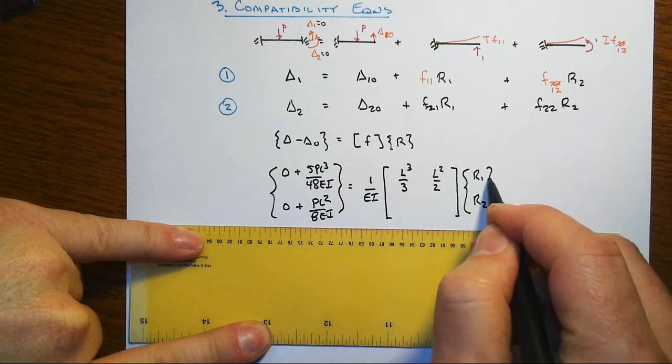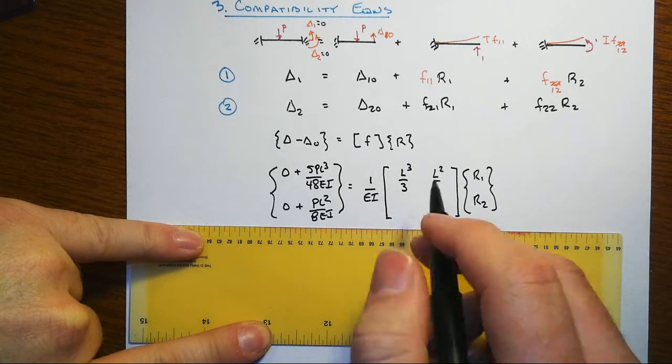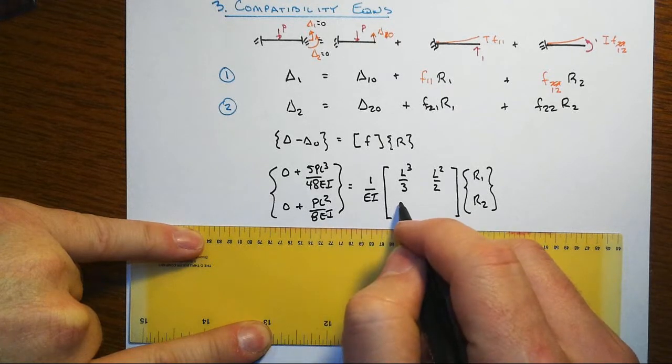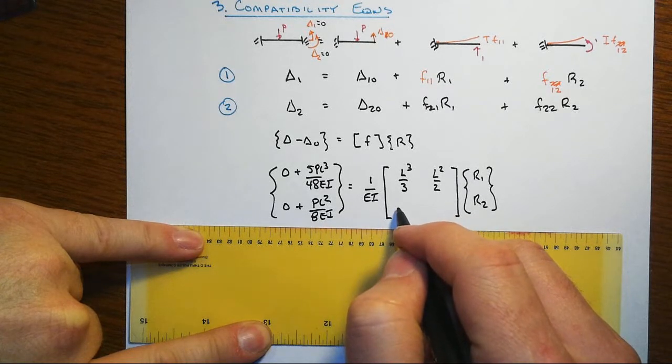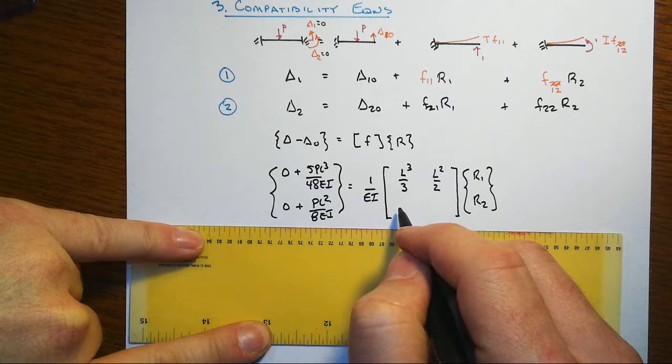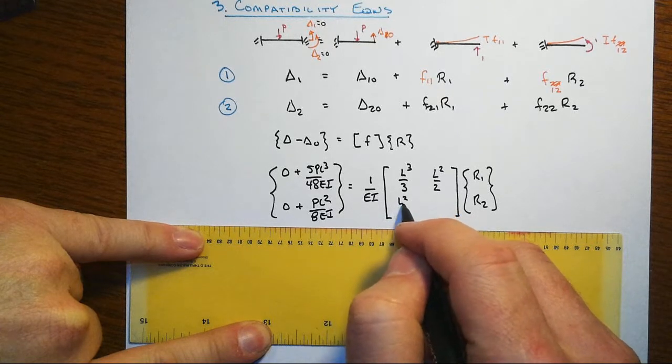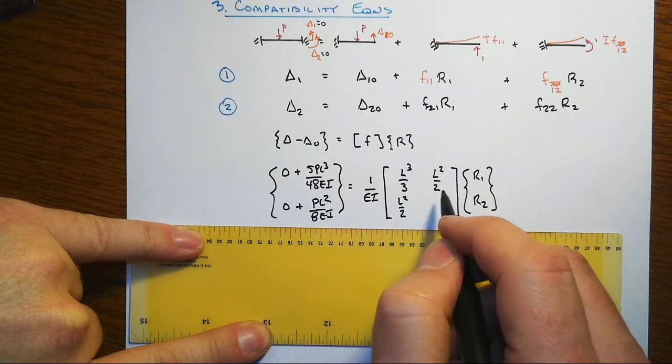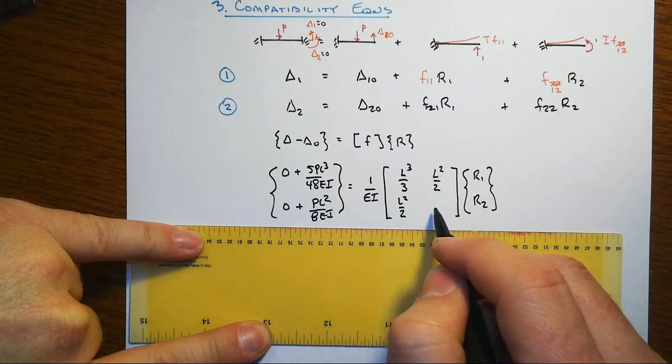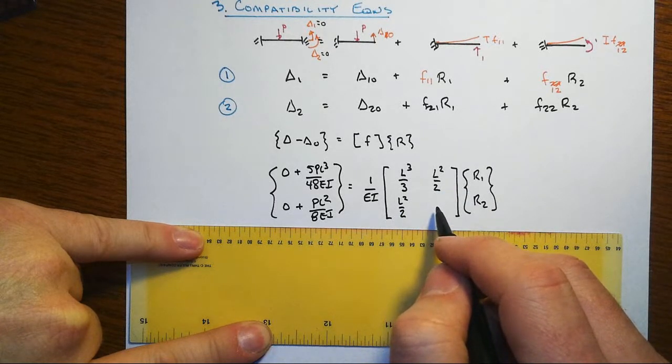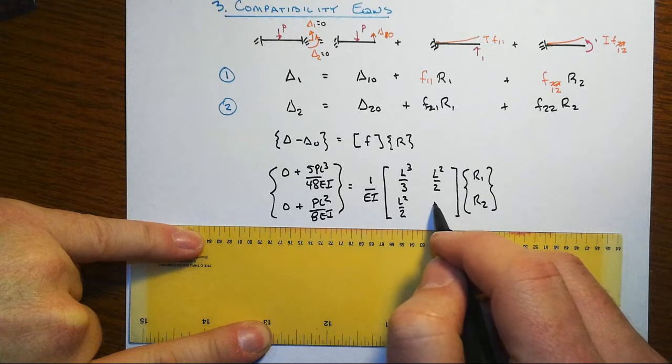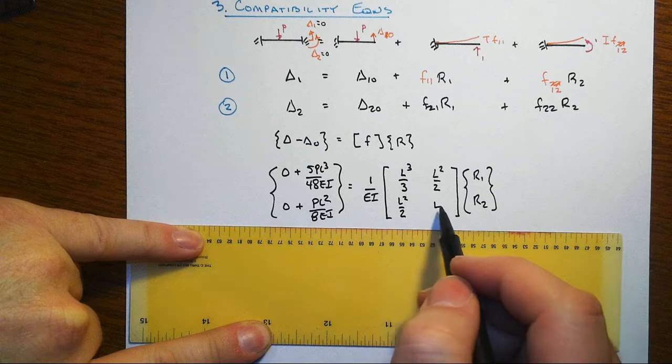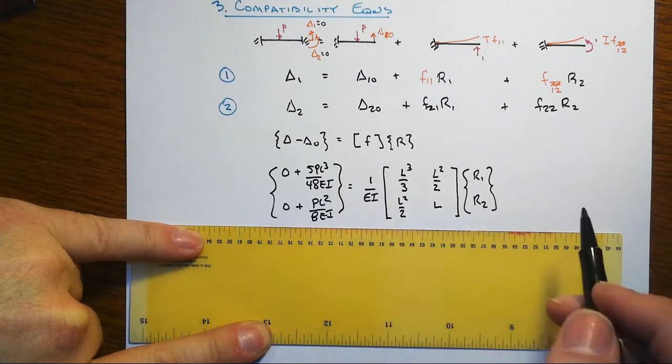And then down here in the second equation then we would have for F21 we'd have also L squared over 2. Remember there's a symmetry that's going on in the flexibility matrix. And then down here on F22, the other diagonal, we have just L over EI, of course that I've already factored out.